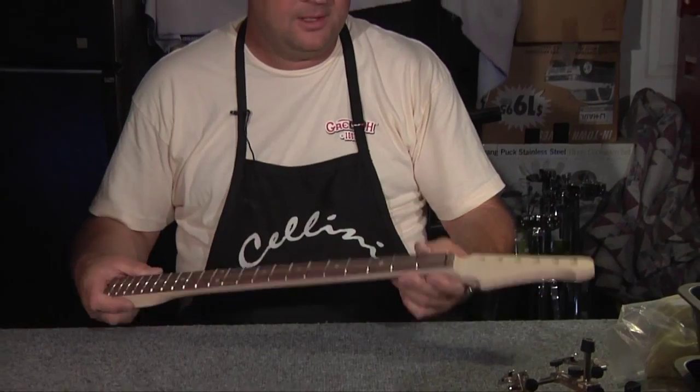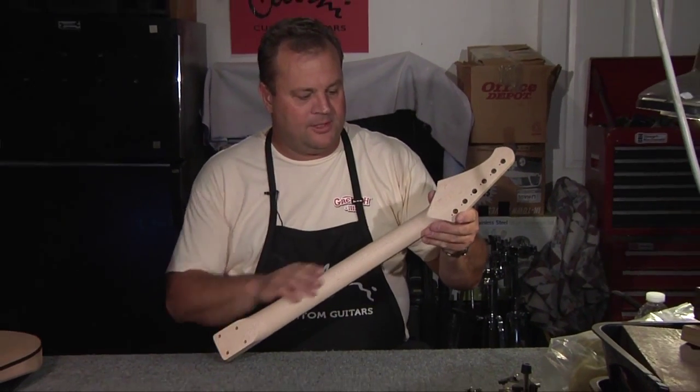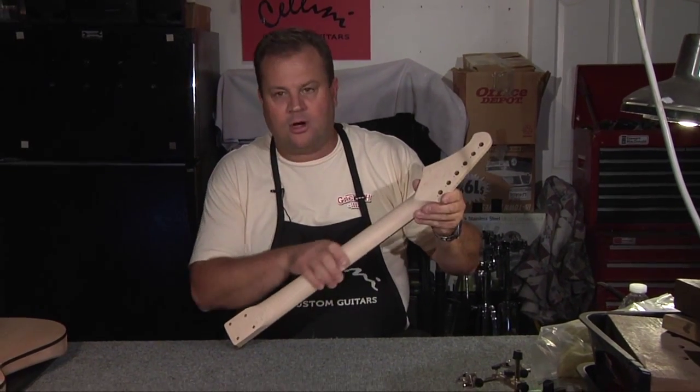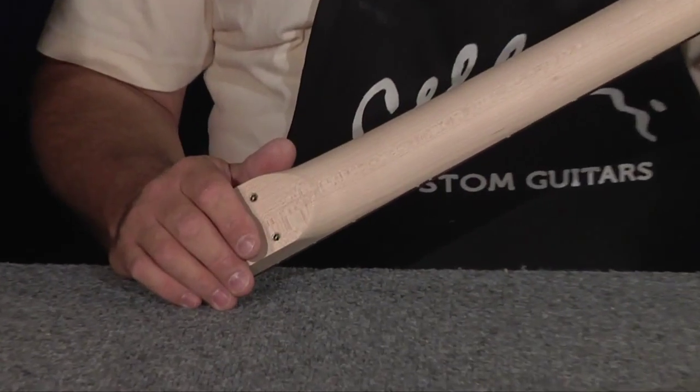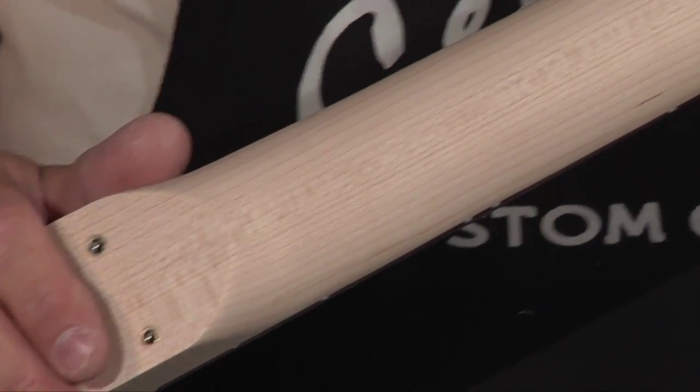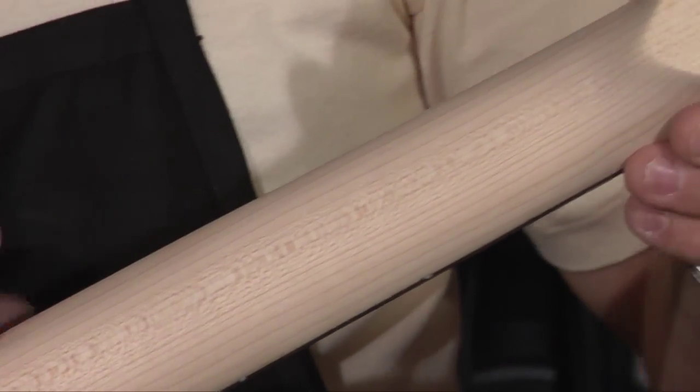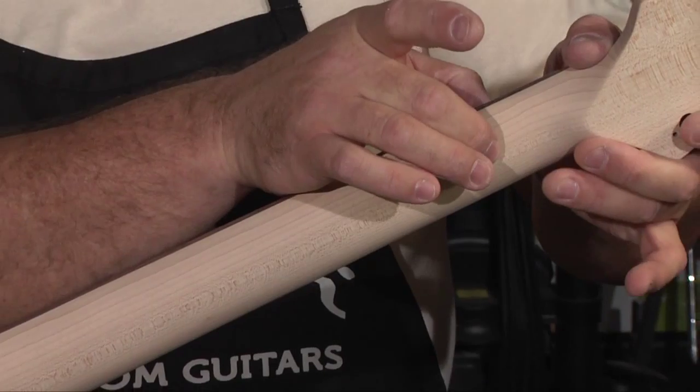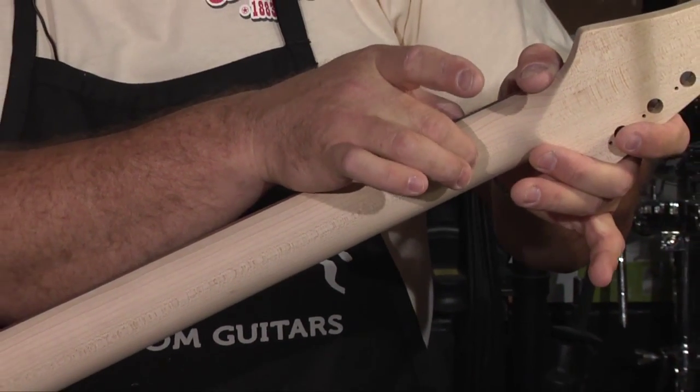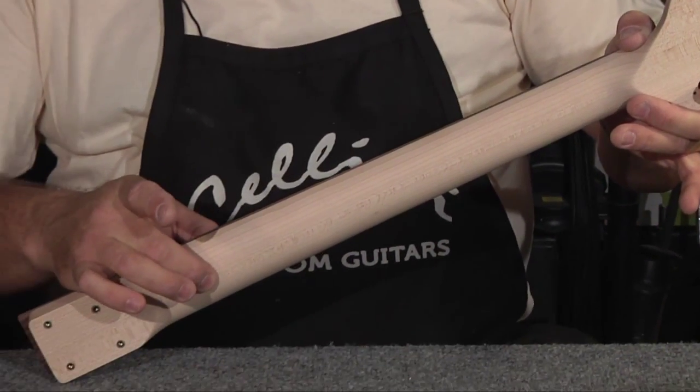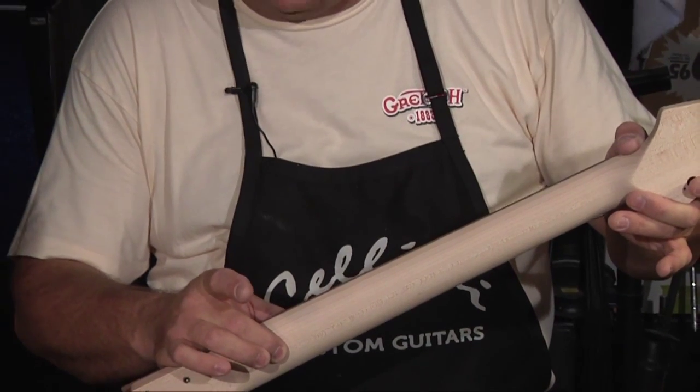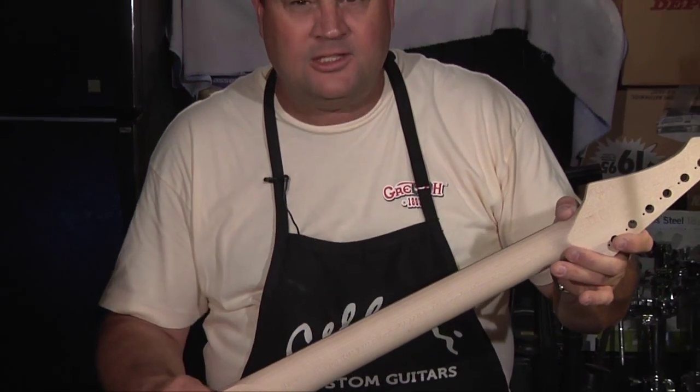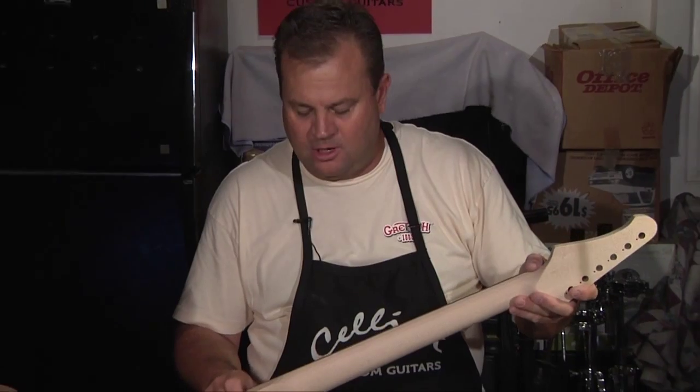Hi everyone, well, just wanted to wrap things up here with the neck, we got the neck all carved out here. It took me about eight hours on this, this is quarter sawn maple. Basically the size that I did, it's .83 at the first fret, and it graduates to about .087. Nice comfortable, happy medium carve.